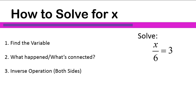Here is our equation: x over 6 is equal to 3. x over 6 means x divided by 6. So we've found our variable, and what happened to it is that we are dividing it by 6. Notice the way that I'm saying that — I'm not saying dividing into, I'm saying divided by 6. That vocabulary is important: it is x divided by 6, the top number divided by the bottom number.